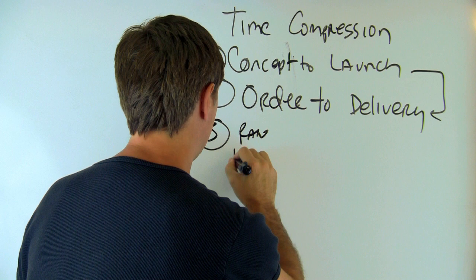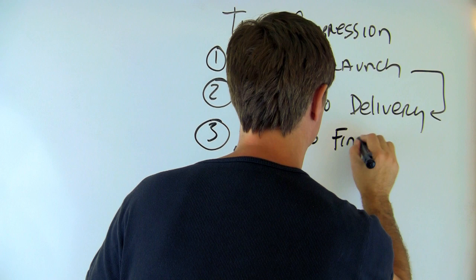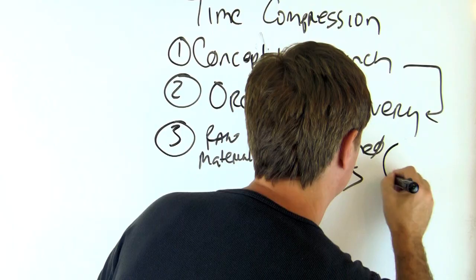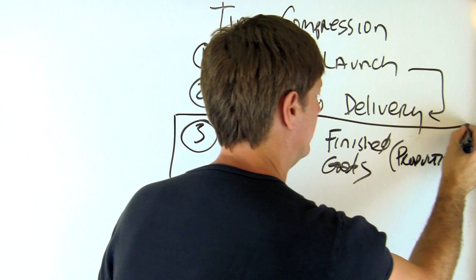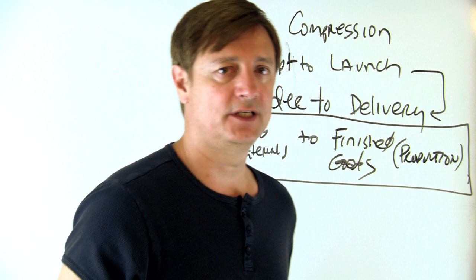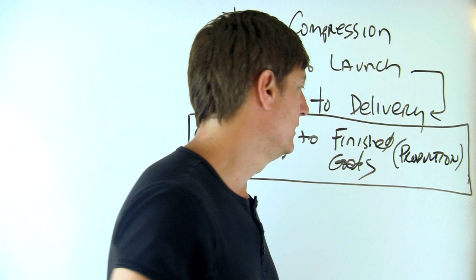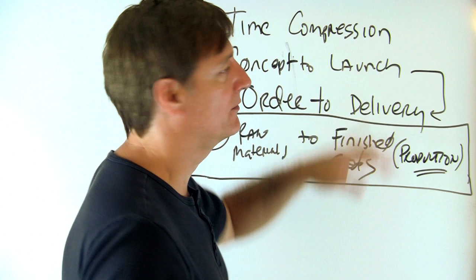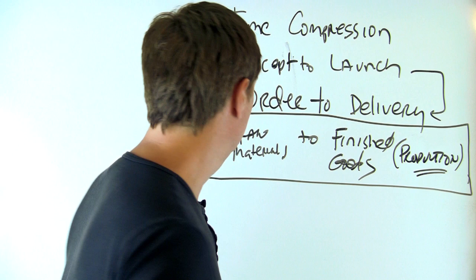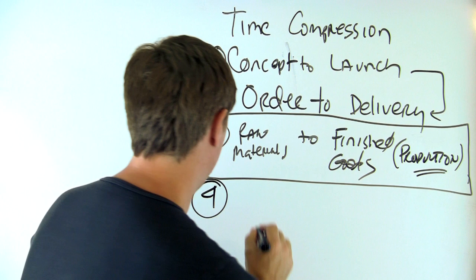The third component is raw materials to finished goods — the production component. The production component of time compression has been perfected by the Toyota Corporation. The Toyota Production System, invented by Taichi Ohno and Shigeo Shingo, focused on using different frameworks and methodologies to create just-in-time production systems that use time compression and eliminate as much waste as possible in getting the product to you.